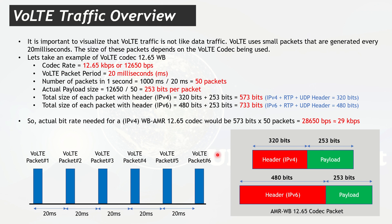Now we can find the effective bit rate needed for this codec. For IPv4: 573 bits × 50 packets = approximately 29 kbps. So a codec rated at 12.65 kbps actually needs around 29 kbps over the air, because the header overhead must also be included.